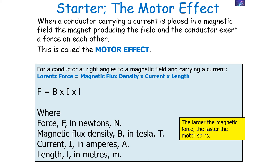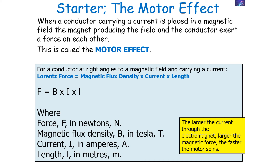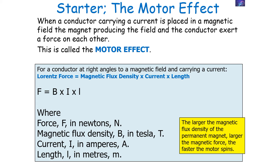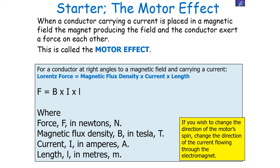The larger the magnetic force, the faster a motor spins. The larger the current through the electromagnet, the larger the magnetic force, and the faster the motor spins. The longer the length of the electromagnet in the magnetic field, the larger the magnetic force and the faster the motor spins. The larger the magnetic flux density of the permanent magnet, the larger the magnetic force and the faster the motor spins. To change the direction of the motor's spin, you can change the direction of current flowing through the electromagnet, or change the direction of the magnetic field of the permanent magnet. If you do both at once, the two effects cancel out and the motor continues in the original direction.